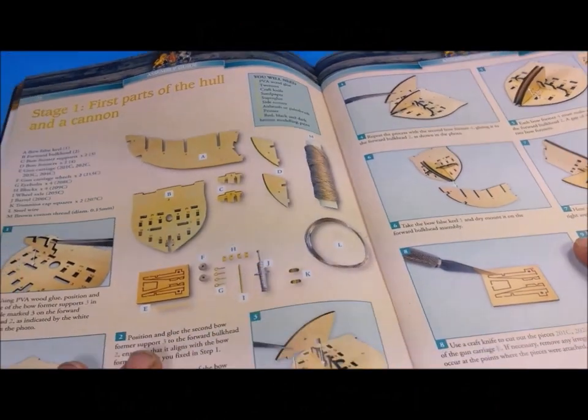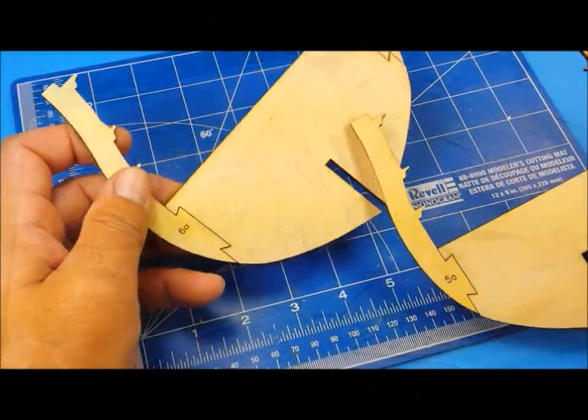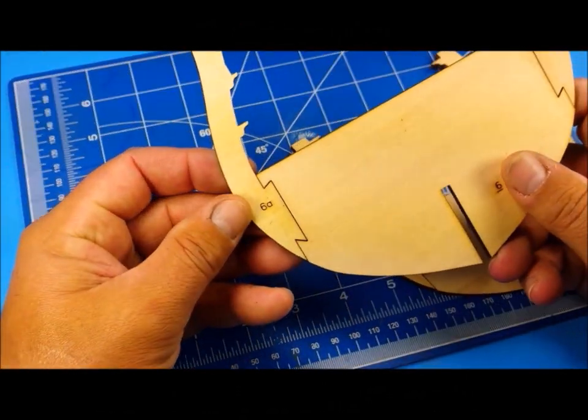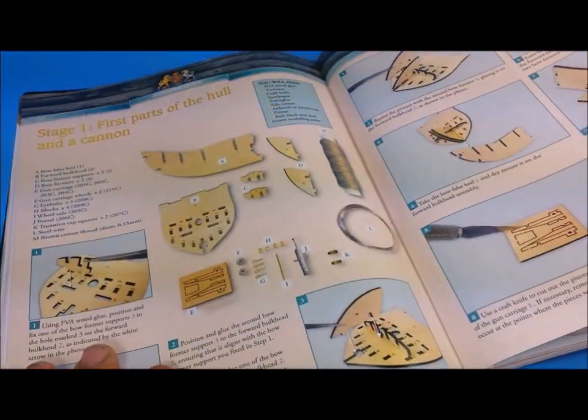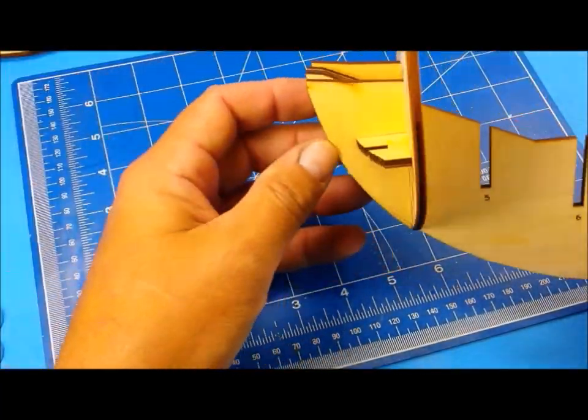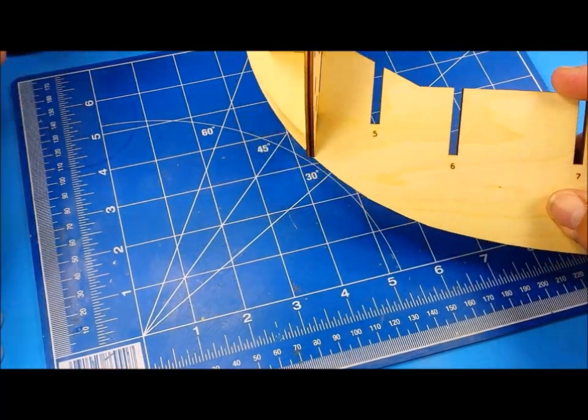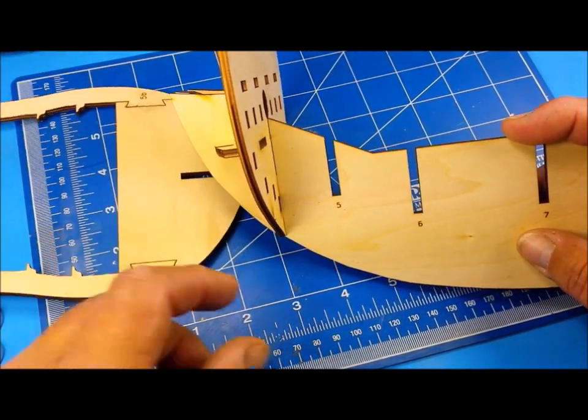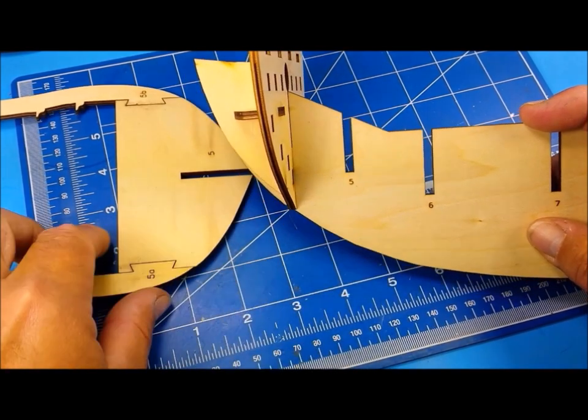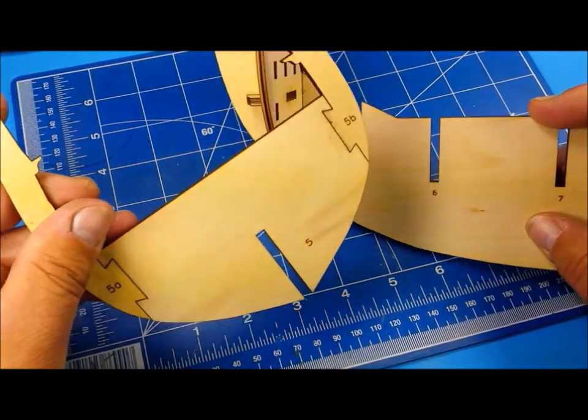Following the instructions, the first to be built is the bow and the first section of the false keel. The upper hull ribbing was attached to the lower bulkhead sections. These parts were glued together with standard PVA or white glue. All of these sections were laid flat and allowed to dry. The construction of the false keel and all the bulkheads is pretty straightforward.